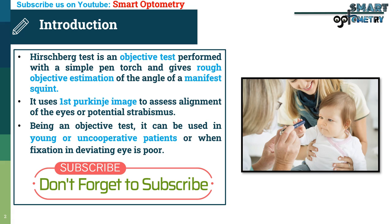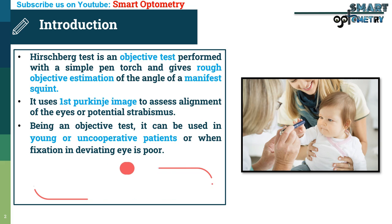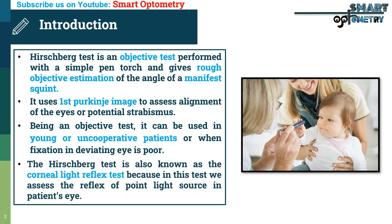Being an objective test, it can be used in young and uncooperative patients or when fixation in the deviating eye is poor. The Hirschberg test is also known as the corneal light reflex test because in this test we assess the reflex of a point light source in the patient's eyes.